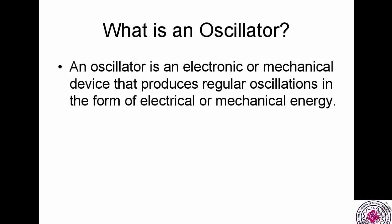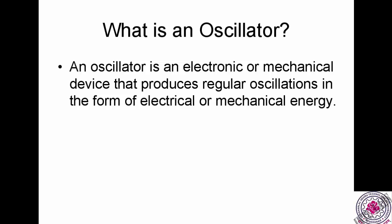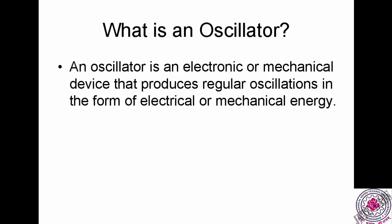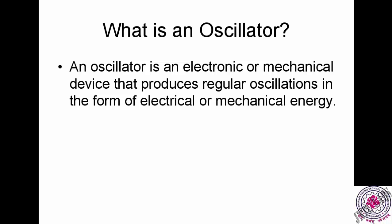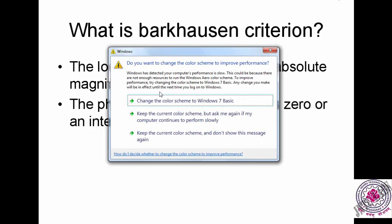An oscillator is an electronic device or an electromechanical device that produces regular oscillations — meaning you get a regular sine wave or cosine wave in the form of electrical energy or mechanical energy. If you are using an electronic device then you will get electrical energy oscillations. If you make a mechanical device for oscillation then you will get mechanical energy oscillations. That is what an oscillator is.